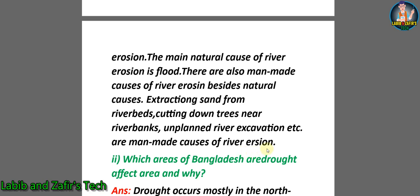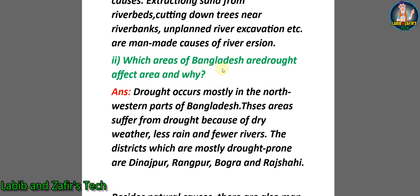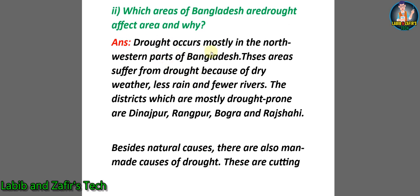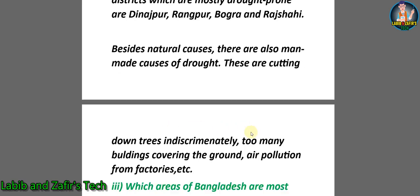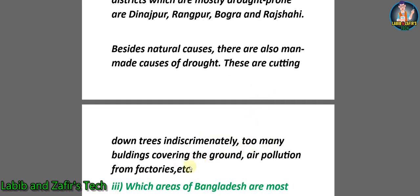Question two: Which areas of Bangladesh are drought-affected and why? Answer: Drought occurs mostly in the northwestern parts of Bangladesh. These areas suffer from drought because of dry weather, less rain, and fewer rivers. The districts most prone to drought are Dinajpur, Rangpur, Bogura, and Rajshahi. Besides natural causes, man-made causes of drought include cutting down trees indiscriminately, too many buildings covering the ground, and air pollution from factories.